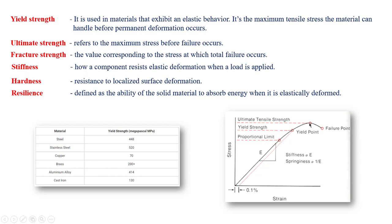The fracture strength is the maximum stress at which total failure occurs — complete failure. In the universal testing machine, at a certain load value the specimen will break apart into two pieces due to shear stress, not normal stress. Because of Poisson's ratio, shear occurs at the center and the material shrinks at that region until it completely fractures.